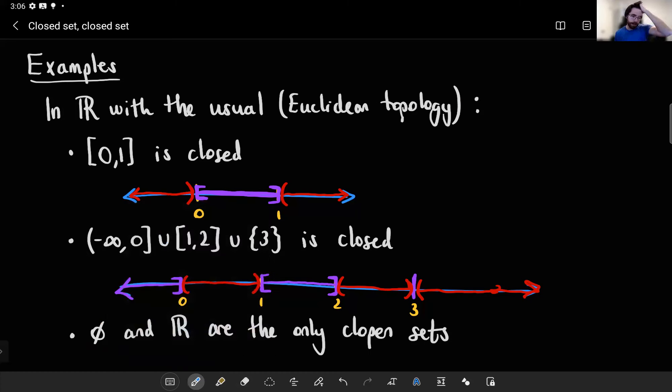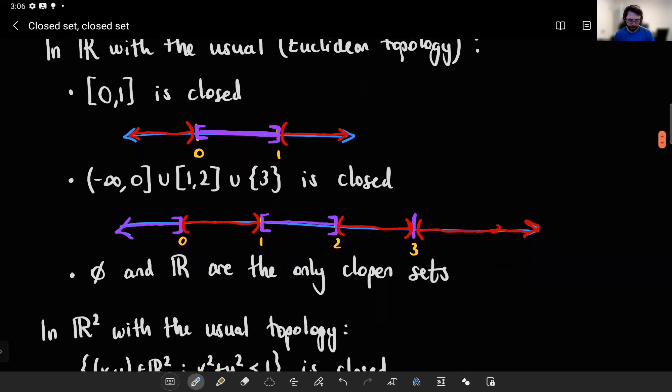So they're clopen. And you can think why nothing else in R, no other subset, would be clopen. I think that is a brain teaser. We'll talk more about it when we get to connected sets.